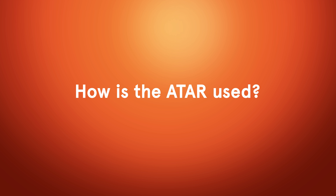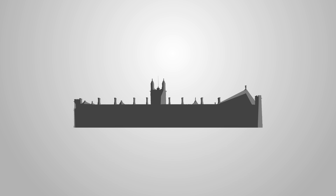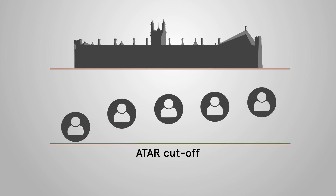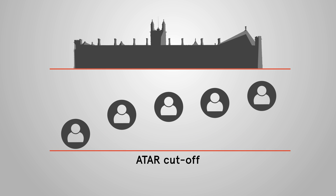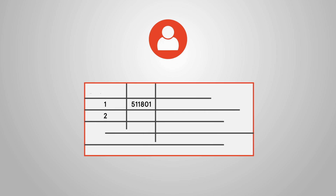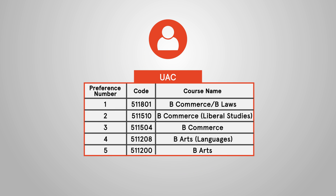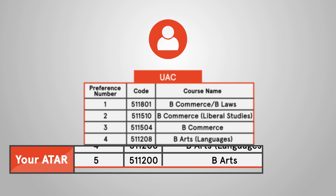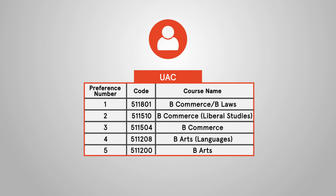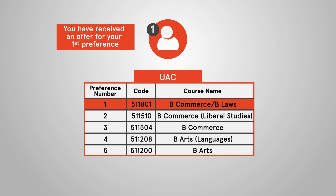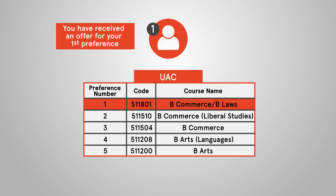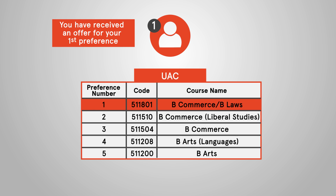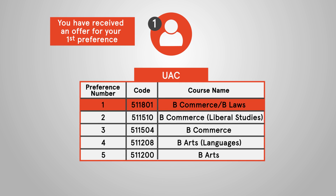How is the ATAR used? Each university sets a minimum ATAR for each course, and the cut-off is the score of the person with the lowest ATAR admitted to the course that year. The system automatically works down your list of preferences and makes you an offer for the highest preference you qualify for. You will get an offer ahead of someone with a lower ATAR who put the same choice higher on their UAC form. So make sure you put what you really want to do as your first preference — you have nothing to lose and everything to gain.